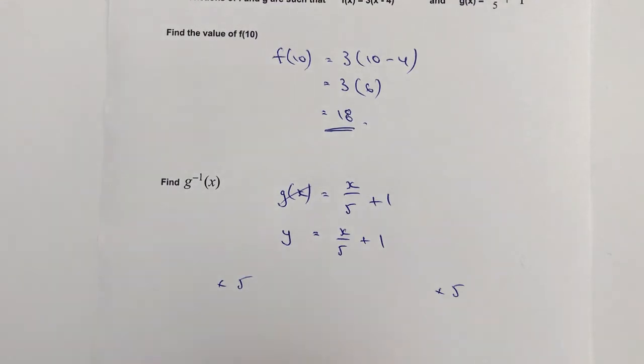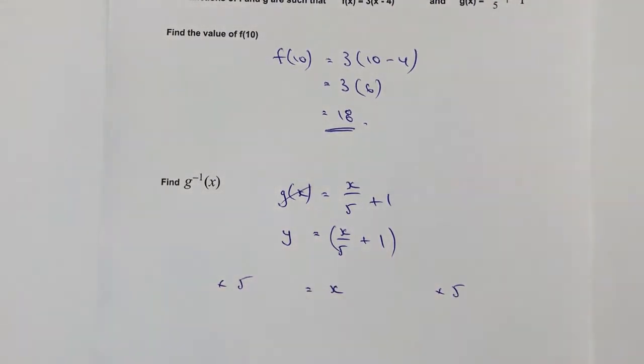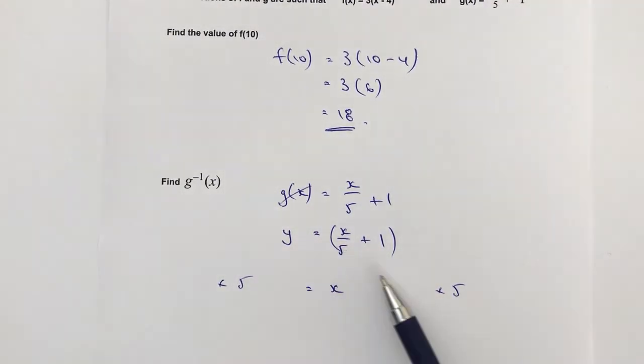So on the right hand side I'm going to get x, because x over 5 times 5 is just going to be x on its own. But don't forget I've also got to multiply this plus 1, so that's going to become x plus 5 on the right hand side.